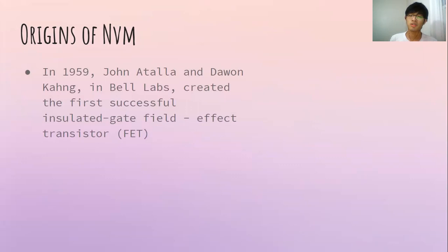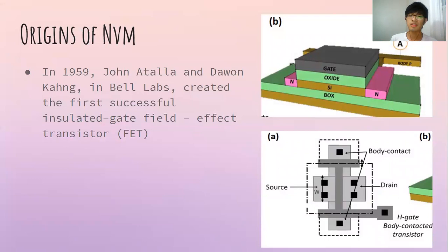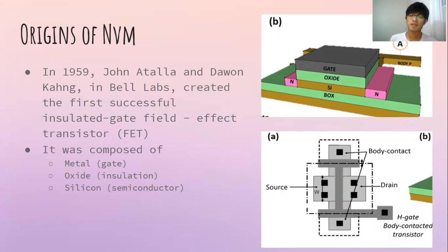So how did non-volatile memory begin? Non-volatile memory began in 1959 where John and Darwin created the first successful insulated gate field-effect transistor, which is displayed on the side. It consists of a metal, which is the gate, an oxide, which is an insulator, and silicon, which is a semiconductor. Because these materials were used, the researchers named it MOSFET, or currently known as MOS.